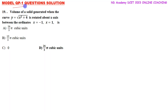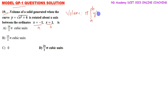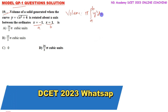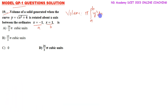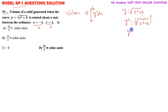The volume of a solid generated when the curve y equals square root of (x squared plus 4) is rotated about the x-axis between x equals minus 1 and x equals 1. The volume formula is: V equals pi times integration from a to b of y squared dx. So y squared equals x squared plus 4.